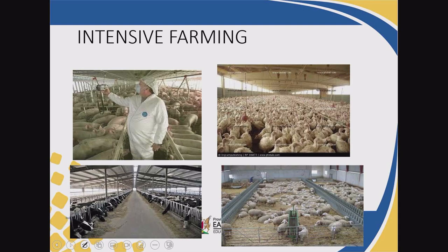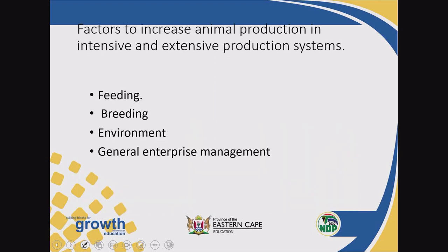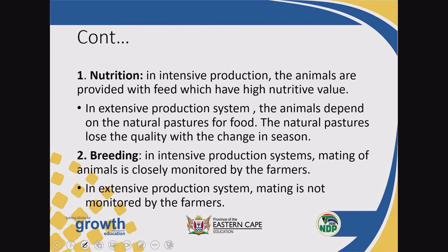These pictures represent what has been discussed. The first picture represents intensive production system — as you can see, there are many animals in a small space, such as sheep waiting to be provided a fully balanced ration. The other picture represents extensive production system where animals go and find food for themselves. Even if you see many chickens, they are finding food for themselves. We also have factors that increase animal production in both intensive and extensive systems: feeding, breeding, environment, and general enterprise management.